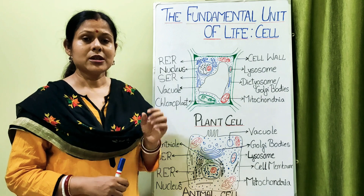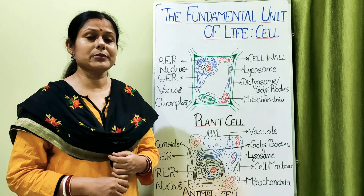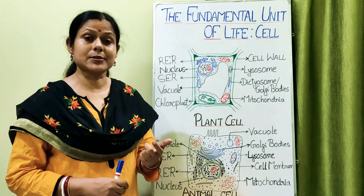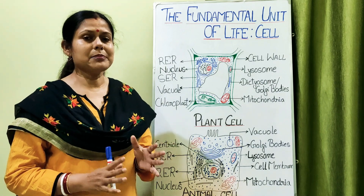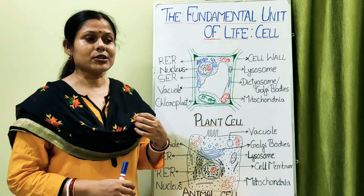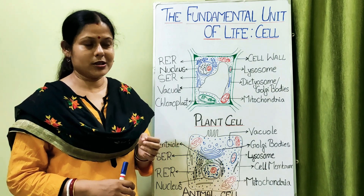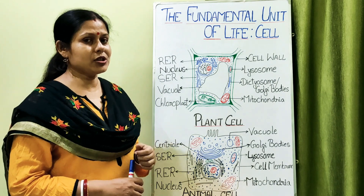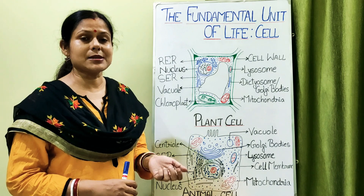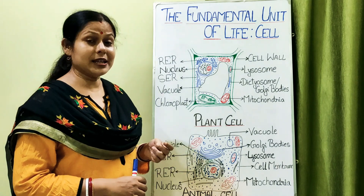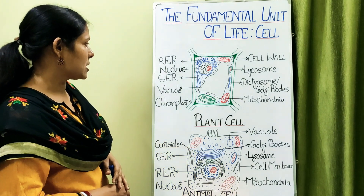Most cell organelles inside plant and animal cells are bounded by a membrane called the unit membrane. This membrane has the same composition as the cell membrane — it is made up of a phospholipid bilayer and has proteins in it. There must be some system inside the cell that helps in maintaining, repairing, and making up this membrane, and we will study which organelles make this possible.